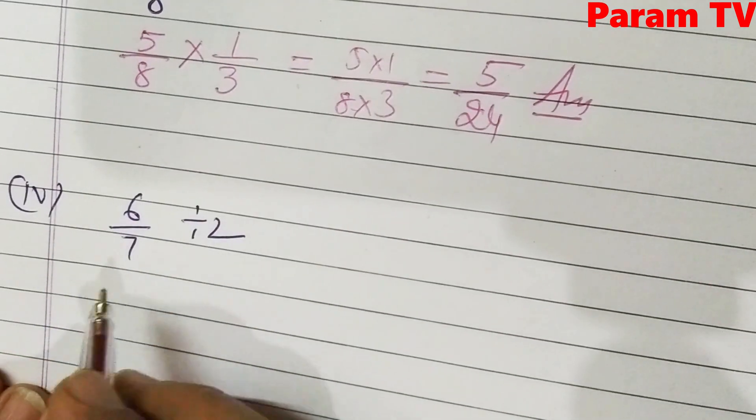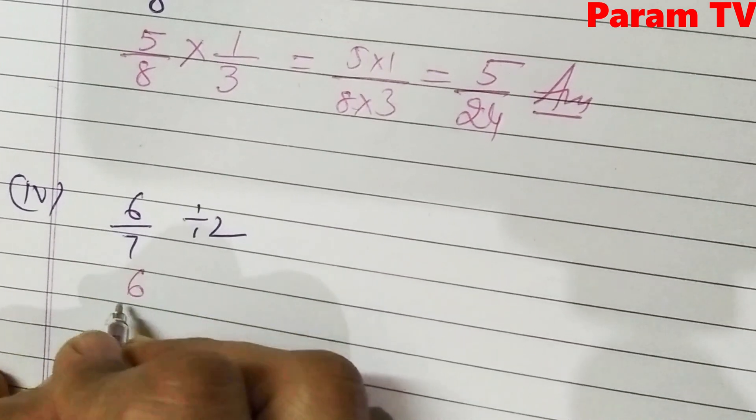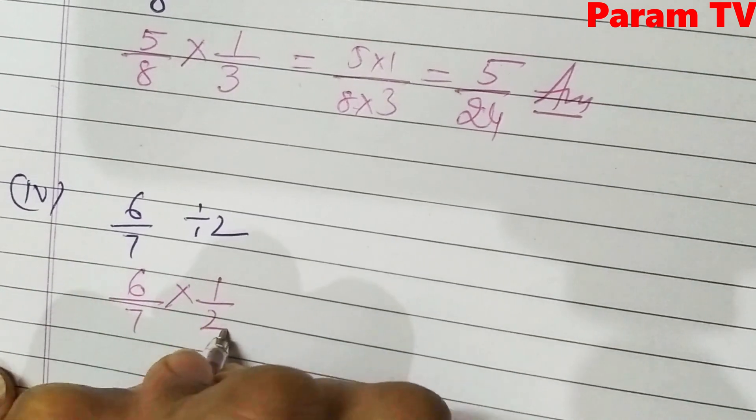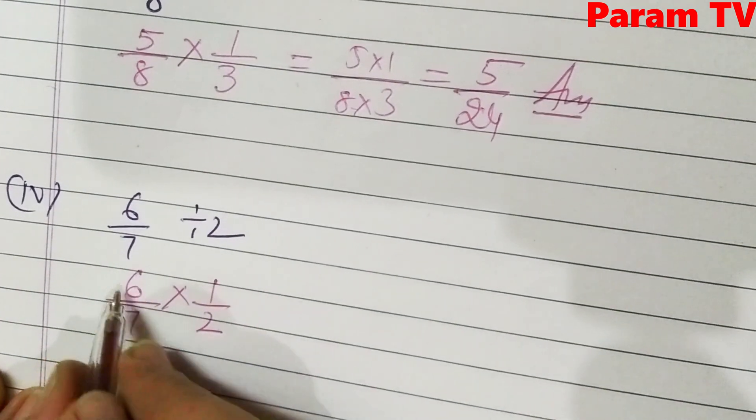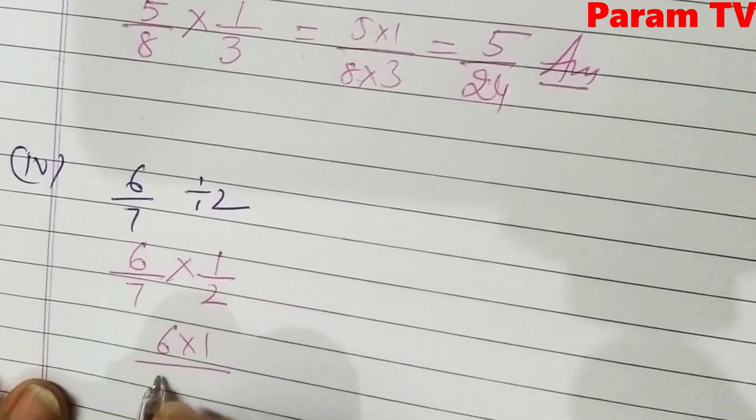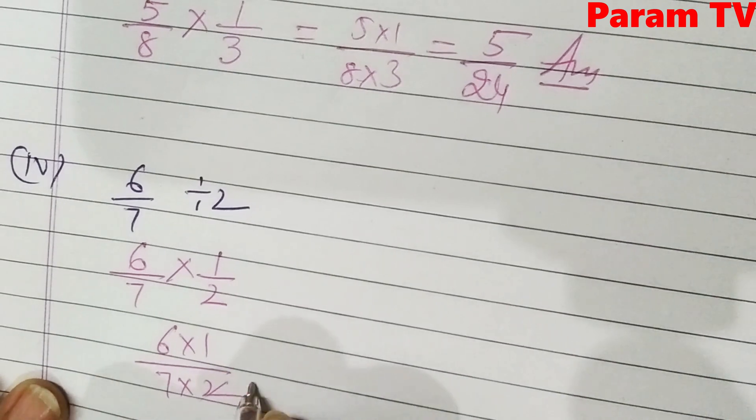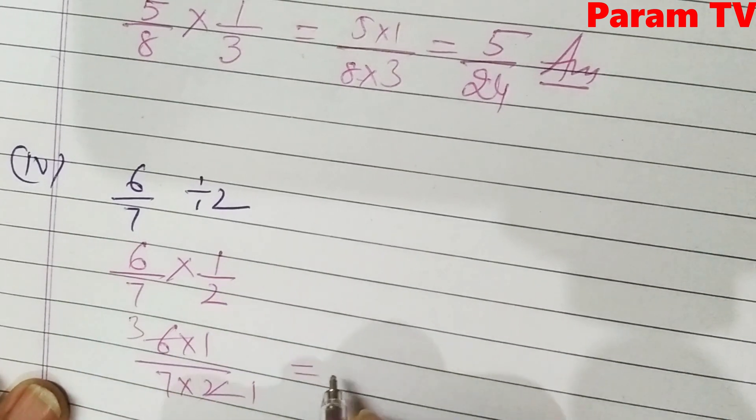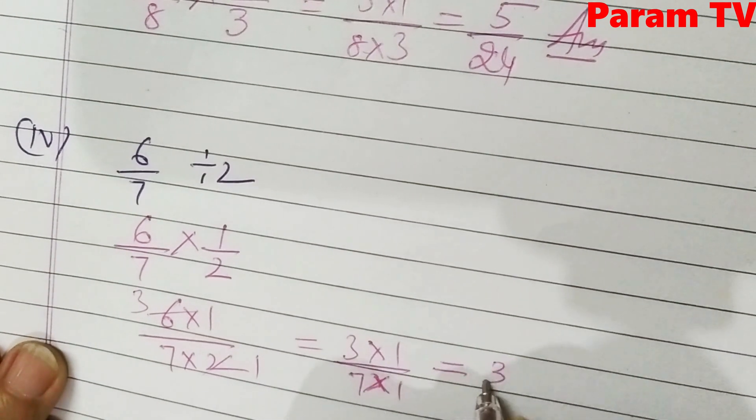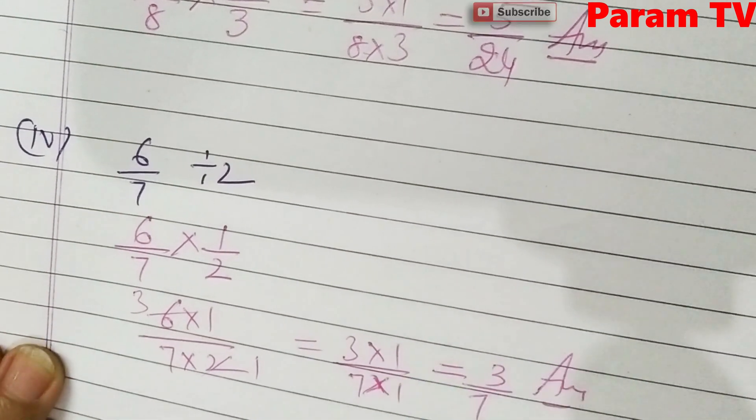Next is 6 by 7 divided by 2. So this is 6 by 7. Divide, 3 by 7. This is the answer.